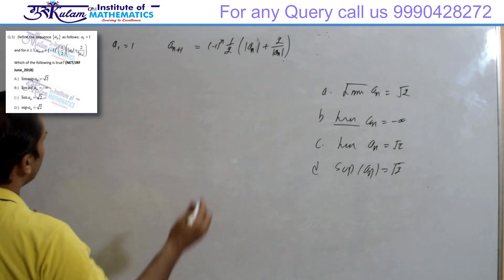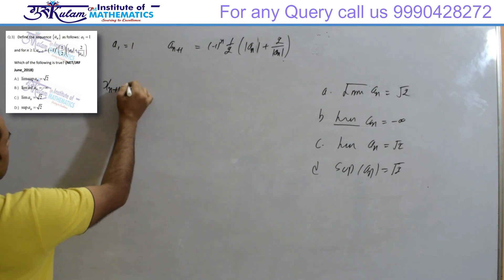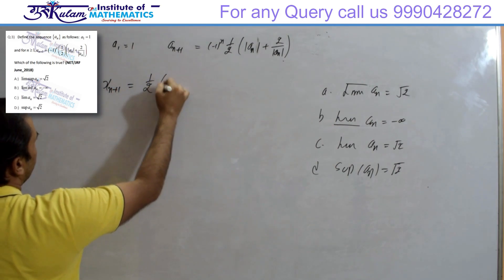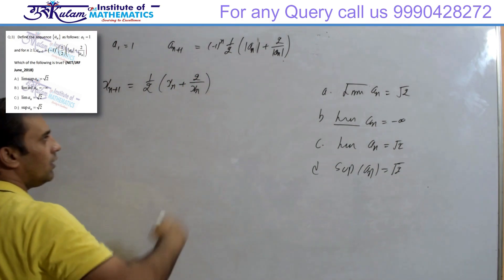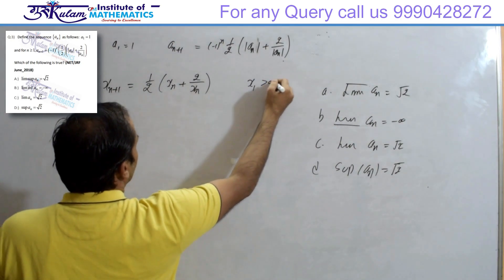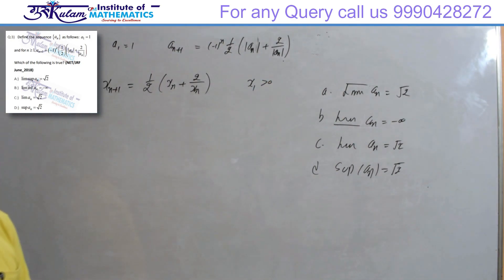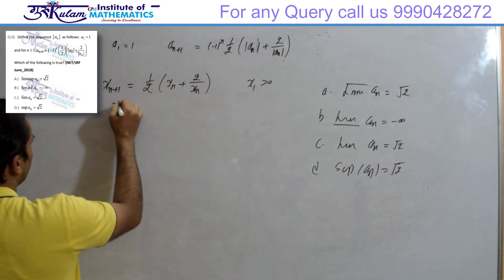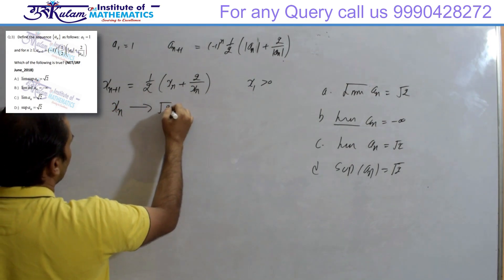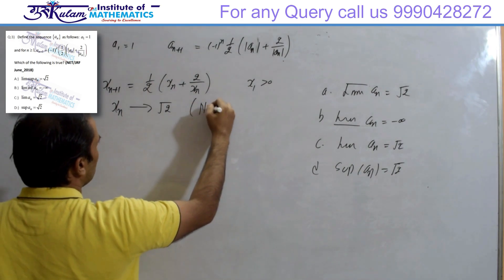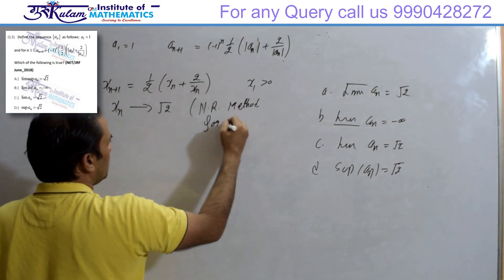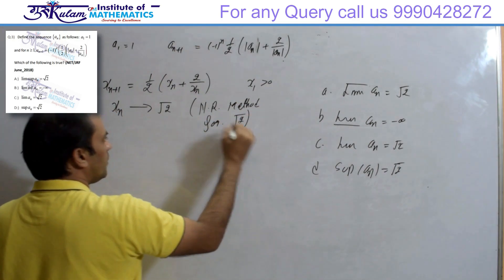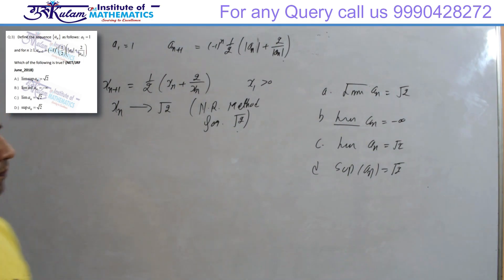Consider the sequence x_{n+1} = (1/2)(x_n + 2/x_n) with initial value x1 > 0. You can easily verify that this x_n converges to √2, because if you have studied numerical methods, this is the Newton-Raphson method for finding the square root of 2. You can prove that it always converges to √2.